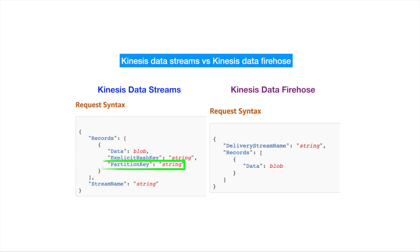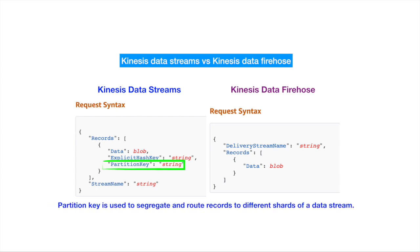The partition key field is important because it is a required field when adding a record to Kinesis Data Streams. The partition key is used to segregate and route records to different shards of the data stream. For example, when a user wants to group data based on a container ID or task ID, they set the partition key accordingly — so all data will be grouped and routed based on that key, allowing users to send grouped data to separate destinations.